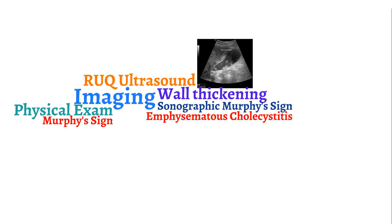What happens if you get an ultrasound and it comes back negative for cholecystitis but you have a high clinical suspicion? The next step is to obtain a HIDA scan. HIDA, or cholescintigraphy, uses radioactive dye that is injected intravenously and is excreted by liver cells.